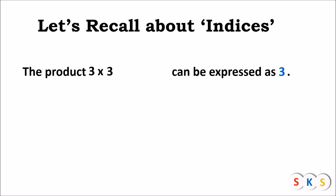The product 3 × 3 can be expressed as 3 raised to 2. The number 2 above the 3 represents how many times 3 appears in the product — two times, that's why it is 3 raised to 2. The product 3 × 3 × 3 can be expressed as 3 raised to 3, and 3 × 3 × 3 × 3 × 3 can be expressed as 3 raised to 5.